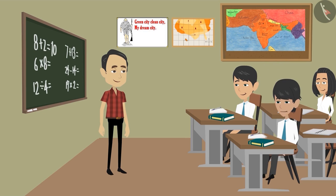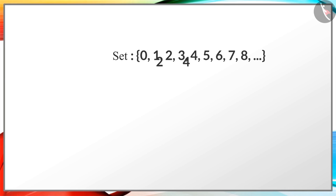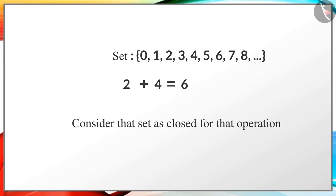Sir, I have understood now. Children, you have already learned about closure property in the previous class. Can you tell me what is closure property? Whenever we use an operation on the numbers of a set and the resulting answer also falls within the same set, then we consider that set to be closed for that operation. Well done, Rahul.